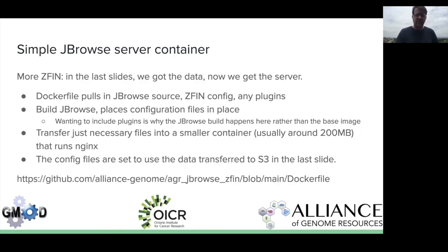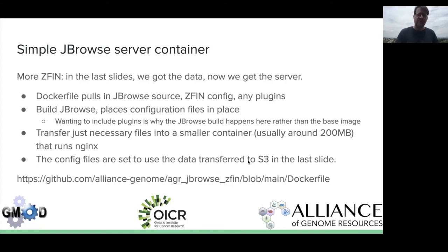Now we've got data — now we need the server. We start with the JBrowse dev Dockerfile. It pulls in the JBrowse source, some configuration files, any plugins, and then builds JBrowse. JBrowse doesn't get built in the base image; it gets built in the container we're creating, so we can pull in any plugins we want, since that has to happen at build time for JBrowse1. We then transfer the necessary files into a smaller container that ends up being 200 or fewer megabytes — it just runs Nginx and has the files needed for running JBrowse. That configuration file is set to use all the data that got transferred to S3 in the previous step.